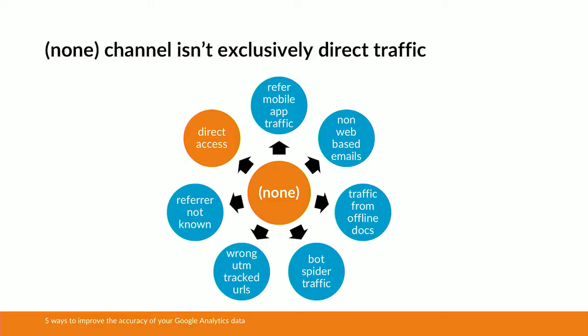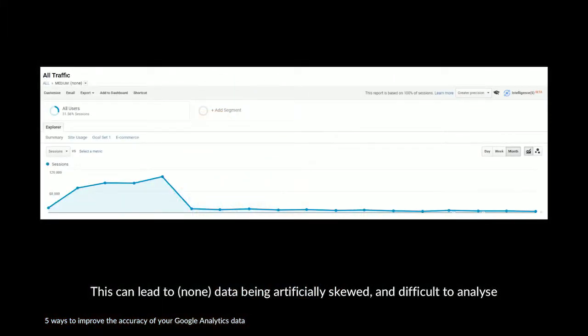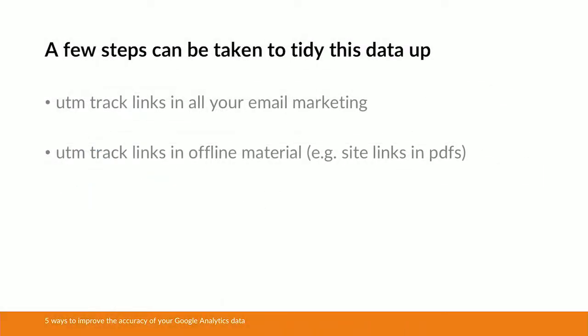So effectively it becomes a bit of a capsule. This is important because it can lead to your none traffic channel being artificially skewed and making your data difficult to analyse. You can see here there's a clear baseline where the none traffic channel should be, but in this instance there were four months of data where the none traffic channel was vastly overinflated because of some of these noise issues. The good news is, with a little bit of housekeeping, you can tidy up the none traffic channel.